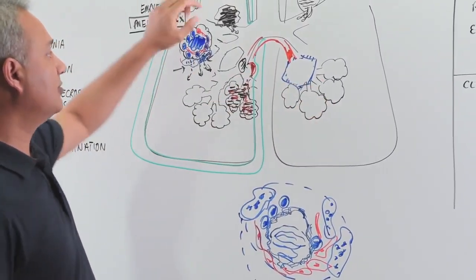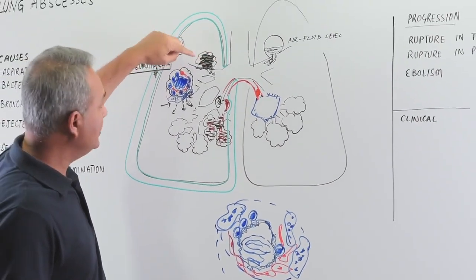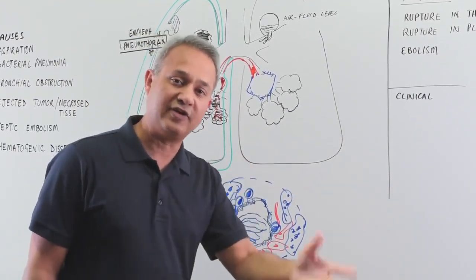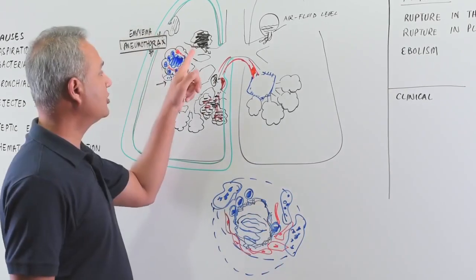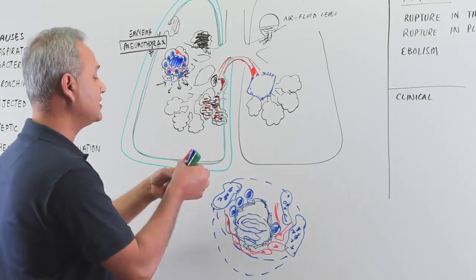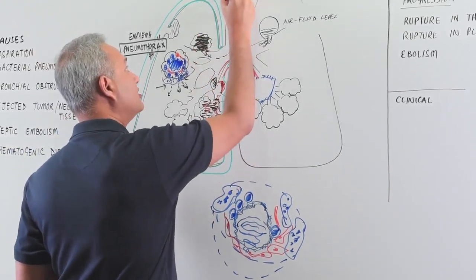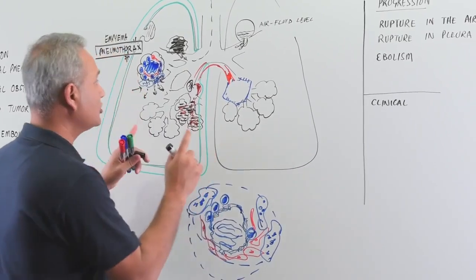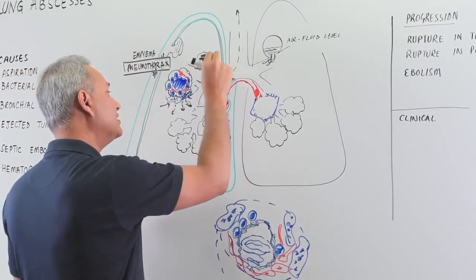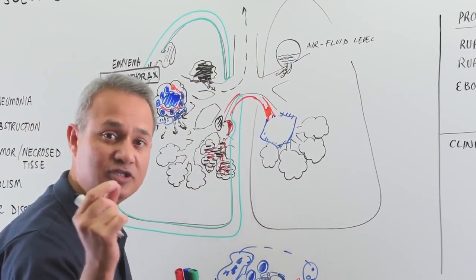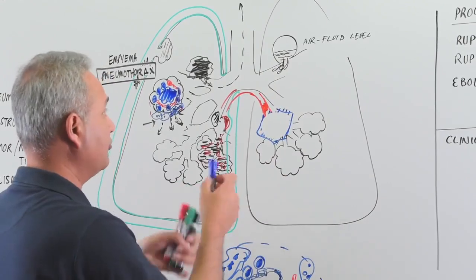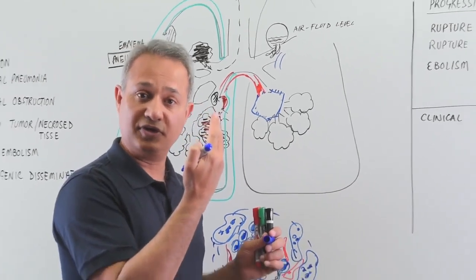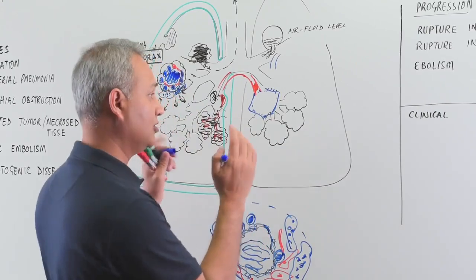Regarding progression: when the abscess ejects into the airways, the patient's sputum becomes highly infective — this is especially important in secondary tuberculosis where the necrotic and infective tissue enters the sputum. Rupture into the pleura causes empyema or pneumothorax. Infected or necrotic fragments can also enter veins, travel to the left heart, reach the brain, and cause meningitis, cerebral embolism, or stroke.